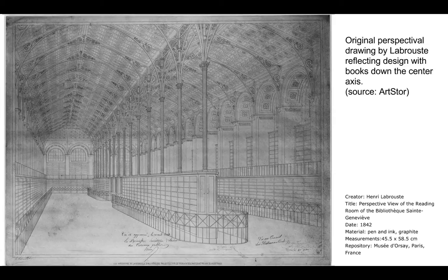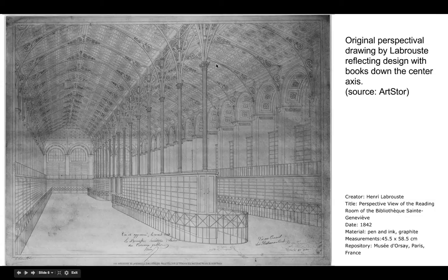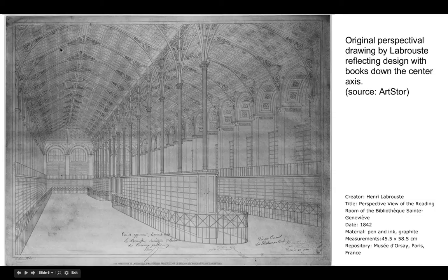An original perspective drawing — an original hand drawing from Labrouste — shows us his first ideas of how this interior is supposed to look. You can see it's reflecting the original plan with shelving in the middle. Interestingly, it also has more gabled roofs here than what ends up happening, so those clean barrel vaults are part of the final project. You can see that the underside of this latticework is a semicircular barrel vault, but the top is still gabled at this stage.